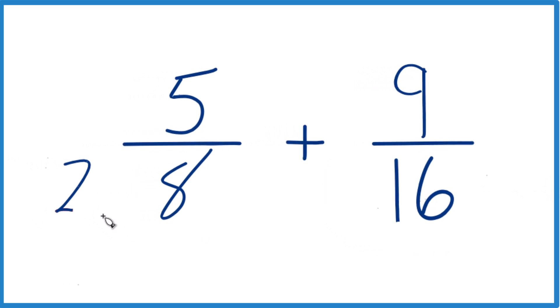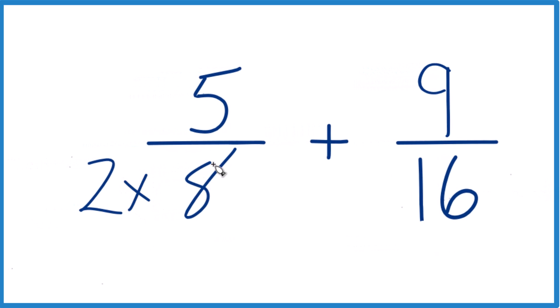So why don't we do this? Why don't we say 2 times 8? Because 2 times 8 is 16. We have 16 here already. We'd be good.